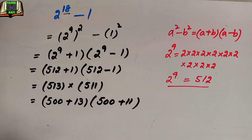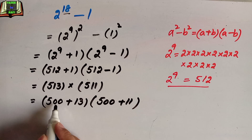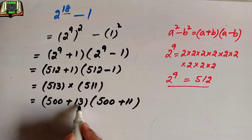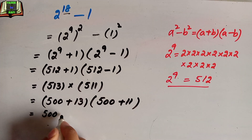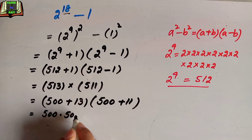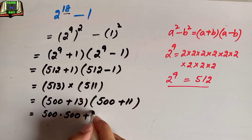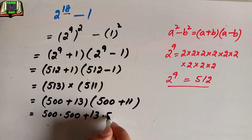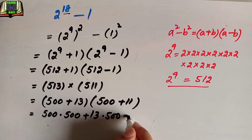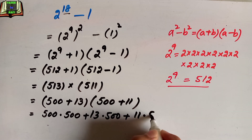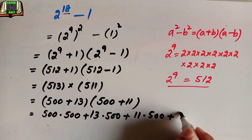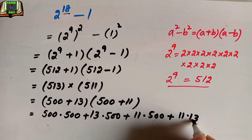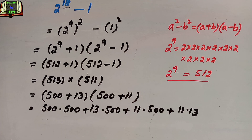Now we multiply using the expanded form: first 500 × 500, then 13 × 500, then 11 × 500, and finally 11 × 13.